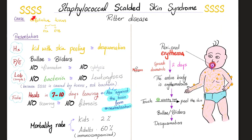Staph scalded skin syndrome is caused by exfoliative toxin A and B. Features: skin peeling and desquamation, bullae and blisters, no inflammation, no cytolysis, no bacteria in lesions, no leukocytosis. It's benign in children — heals in 7–10 days without scarring or fibrosis — but dangerous in adults. It begins with perioral erythema that spreads; when it spreads you get a positive Nikolsky sign. This is a systemic disease; the localized version is called bullous impetigo.